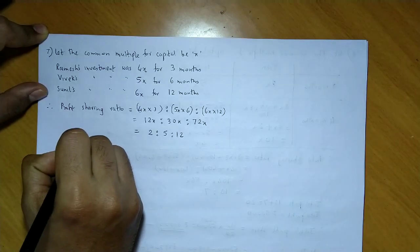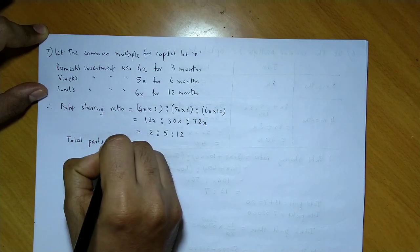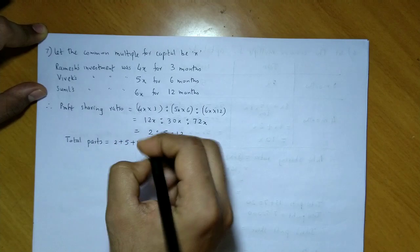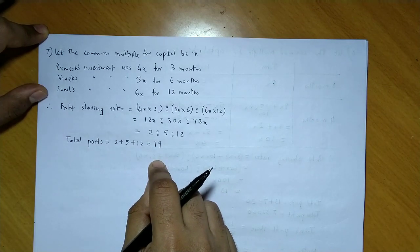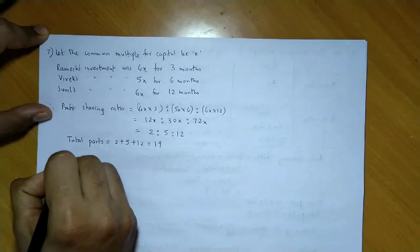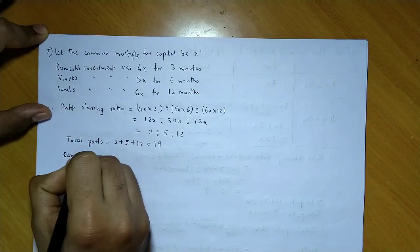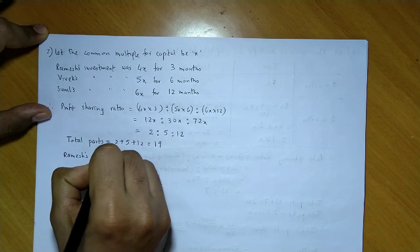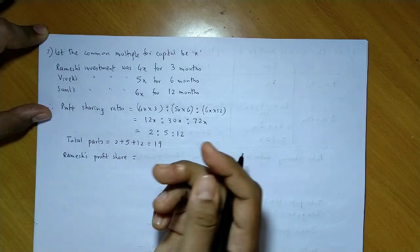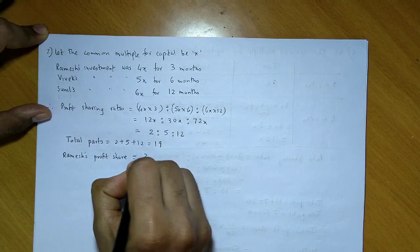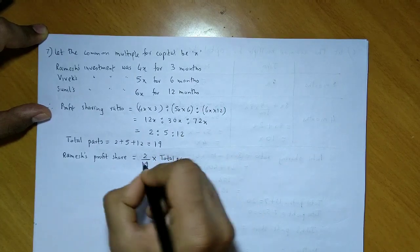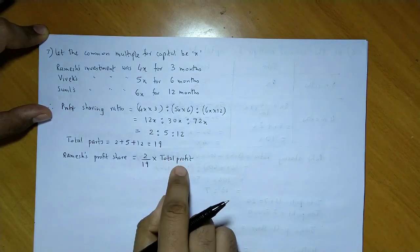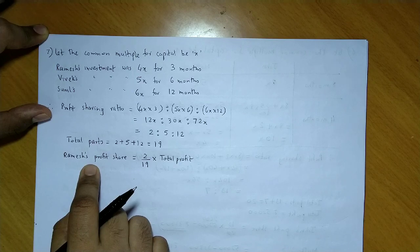The profit sharing ratio simplifies to 2:5:12. The total number of parts is 2+5+12 = 19 parts. At the end of the year, Ramesh received 6400 as profit. Ramesh's share is 2 parts out of 19 parts of the total profit. We will use this to find the total profit.